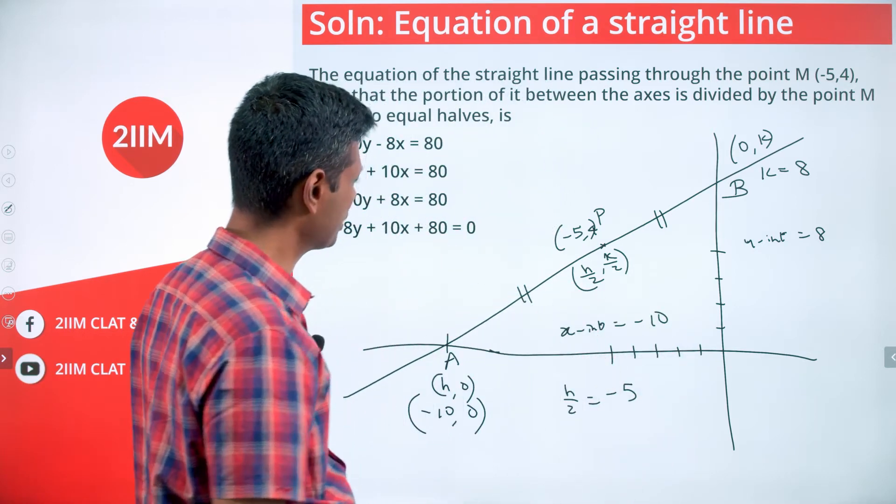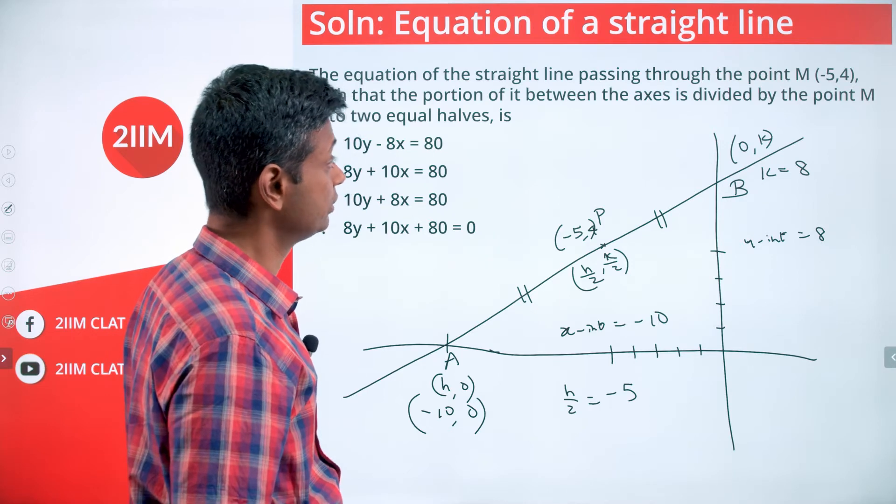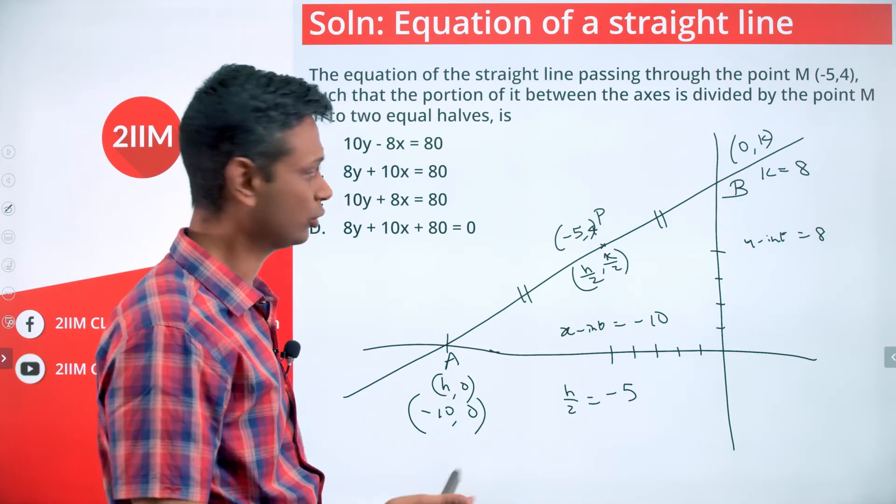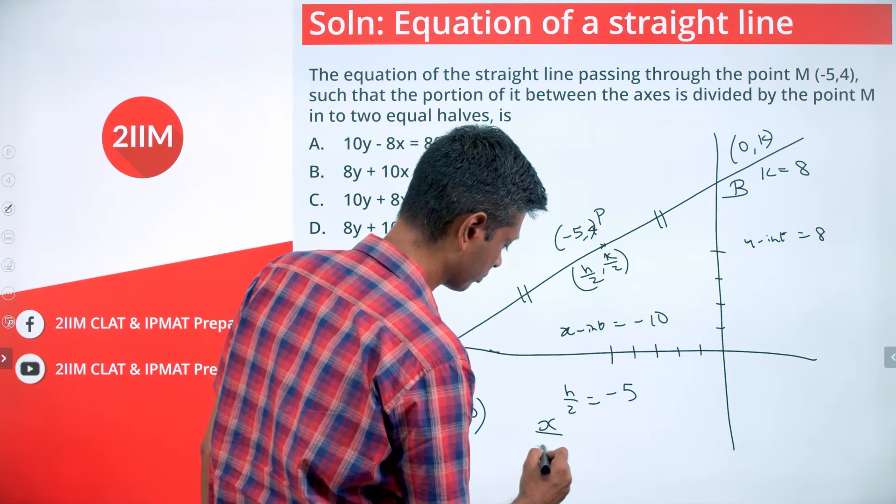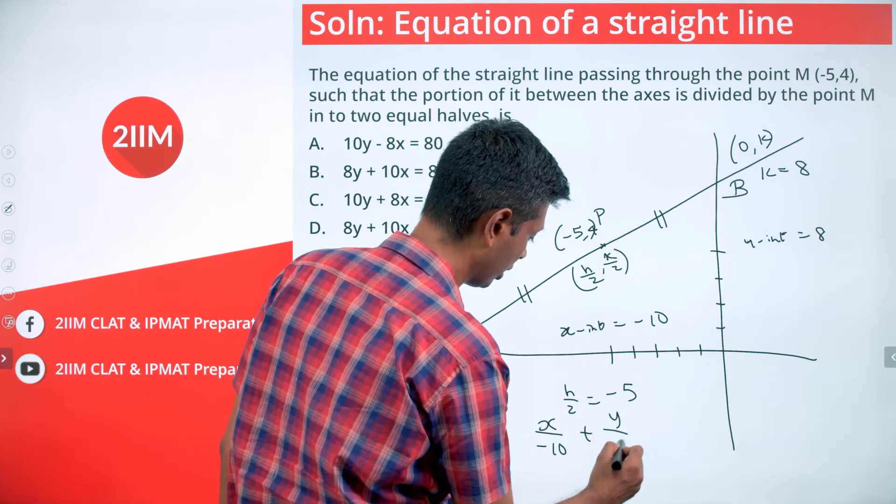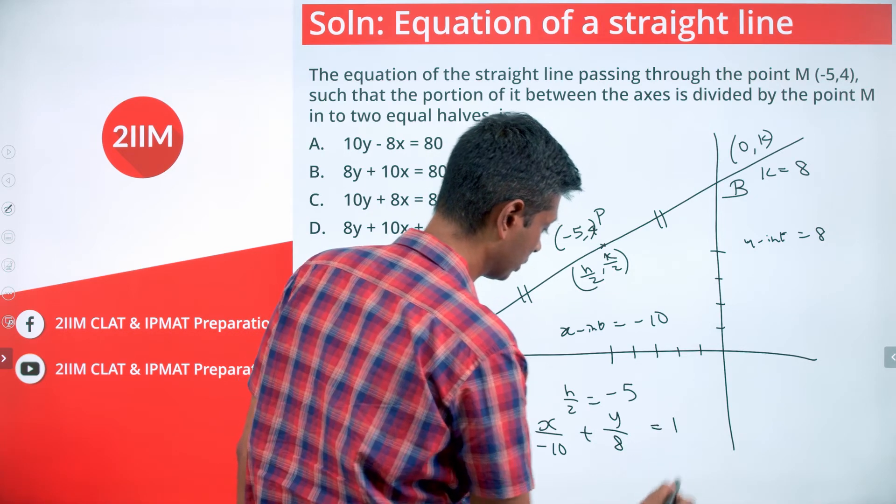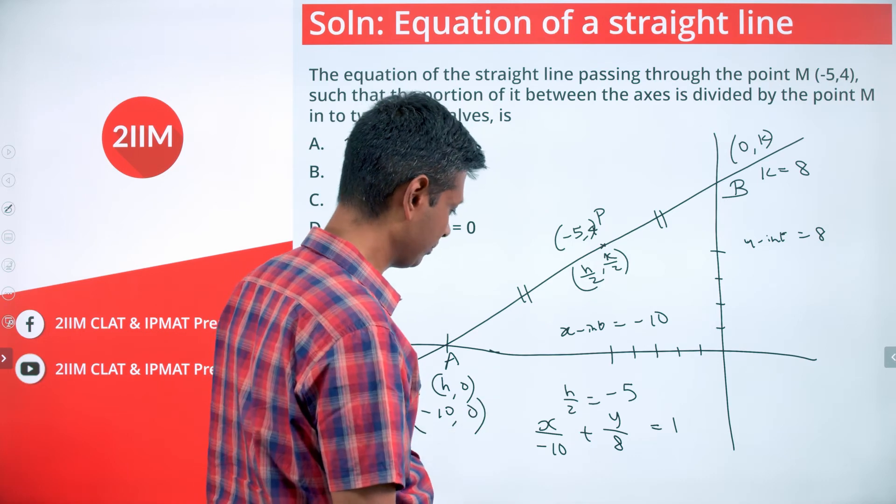There's a y-intercept of 8 and x-intercept of -10. We need to find the equation. (-10, 0) sits on this, (0, 8) sits on this. So you need to find the equation. The equation would be x/(-10) + y/8 = 1.